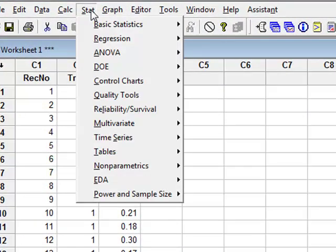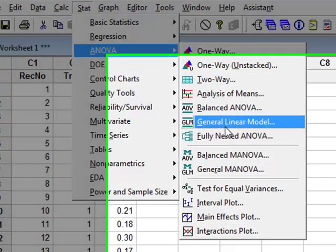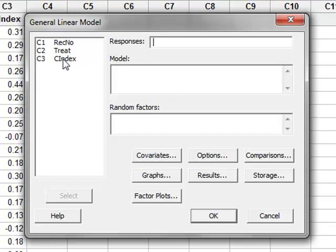So we choose Stat, ANOVA, General Linear Model. The response variable is the chemotaxis index. We can either double-click or select. And for the model, we're testing whether the index is dependent on the level of treatment.